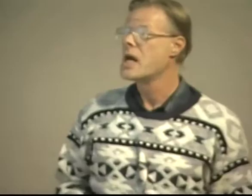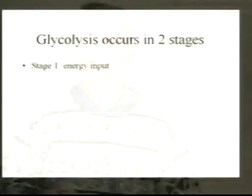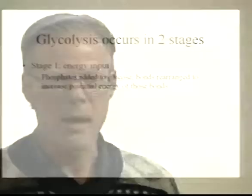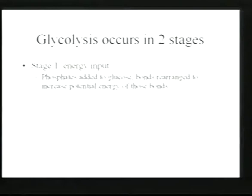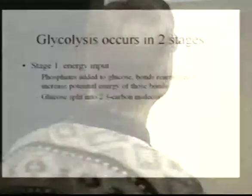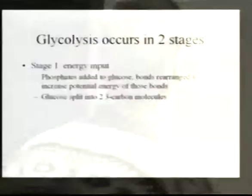The first stage is energy input for glycolysis. What the cell does is add phosphates to glucose — adding phosphates transfers the energy of the phosphate bond to whatever molecule the phosphate is added to, increasing its potential energy. The glucose is then split into two three-carbon molecules, which turn out to be glyceraldehyde-3-phosphate rather than pyruvate directly; we do some rearrangements to get to pyruvate. The second stage is the energy payout, which occurs just after the glucose is split.